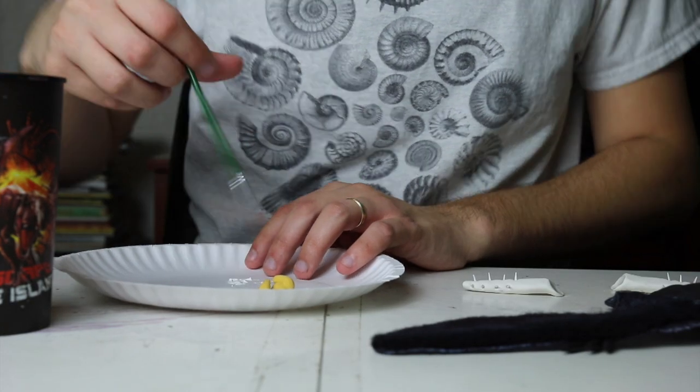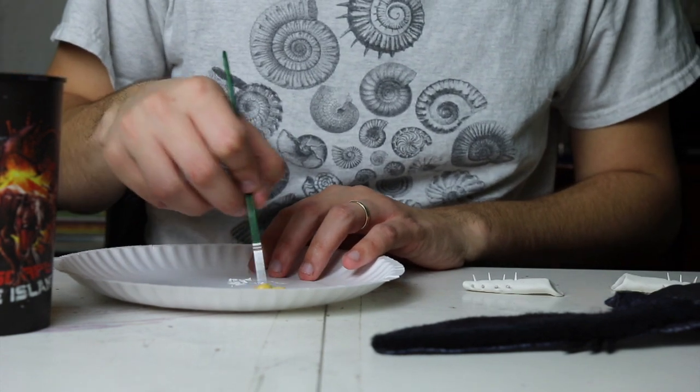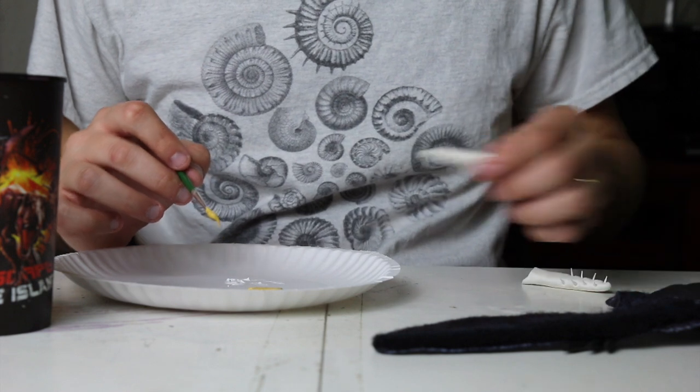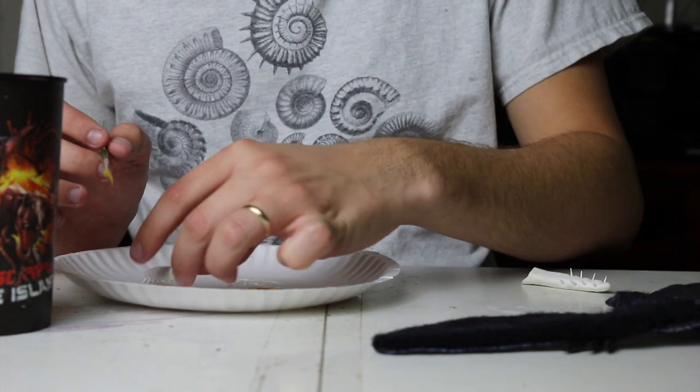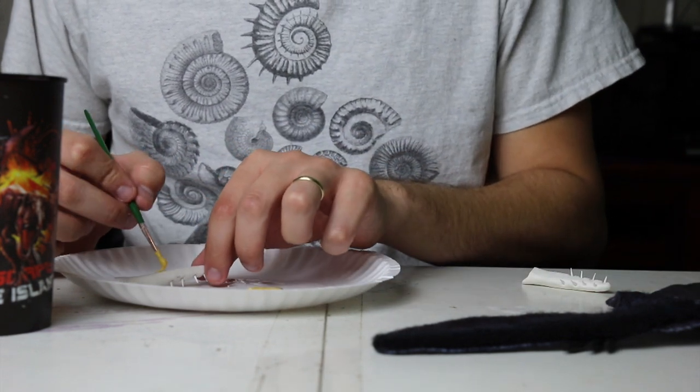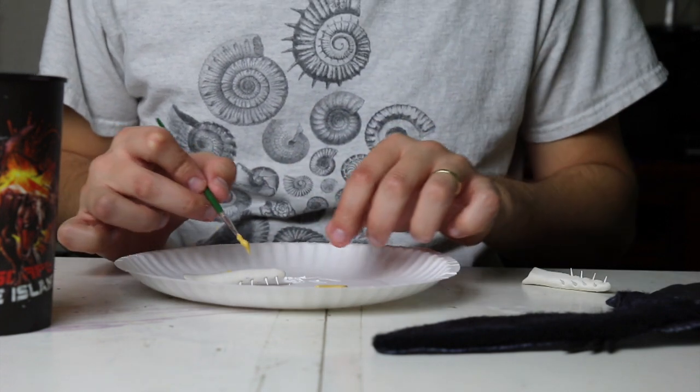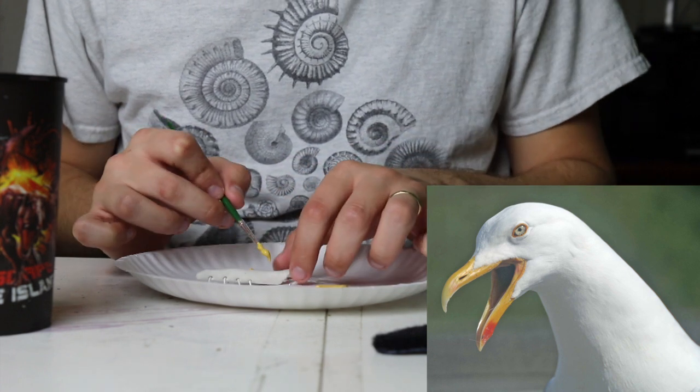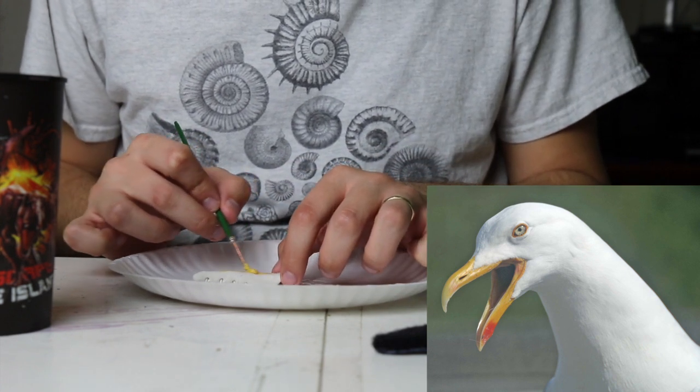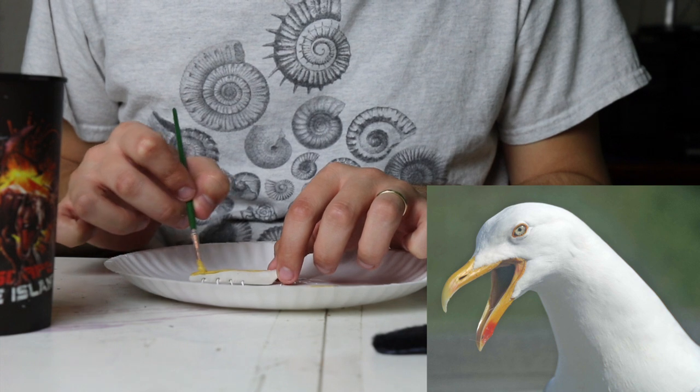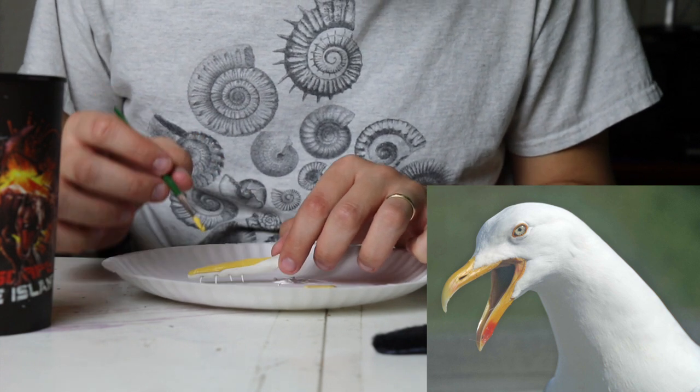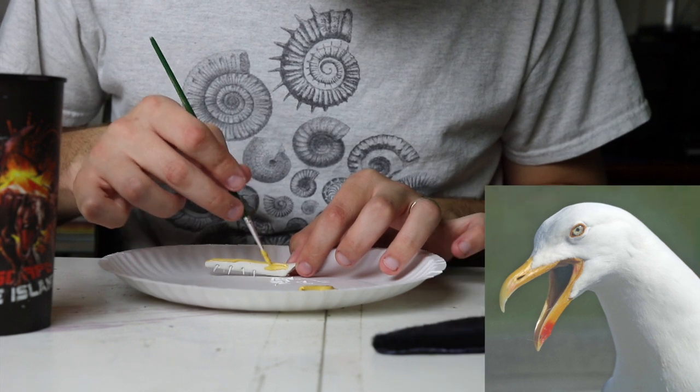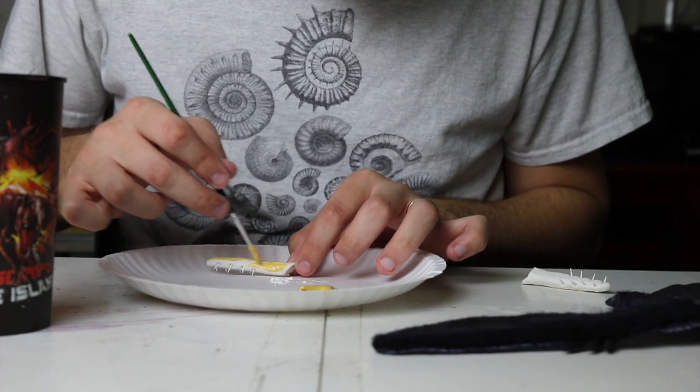Once the clay has dried and I now have the actual shape of the beak ready, I'm going to paint it. These colors are entirely speculative on my part, but like I said before I'm basing this off of animals that occupied a similar niche to pterodactyls in the modern day, which are seagoing birds like gulls.